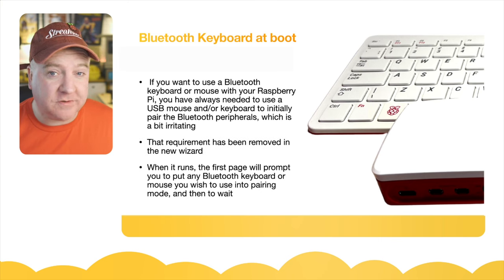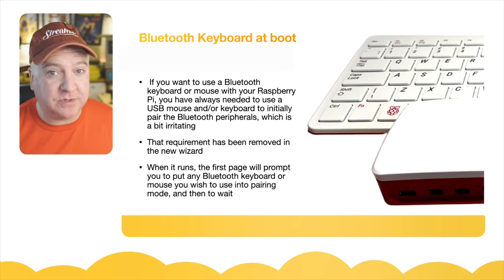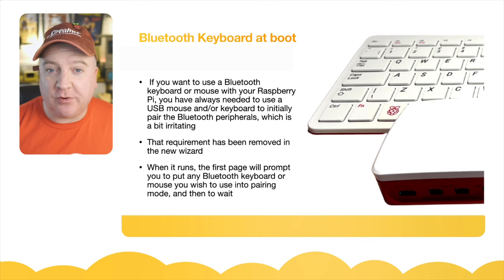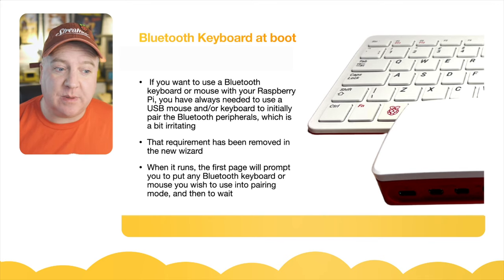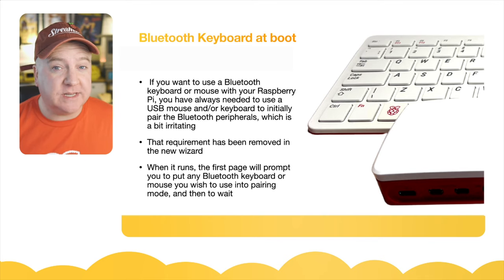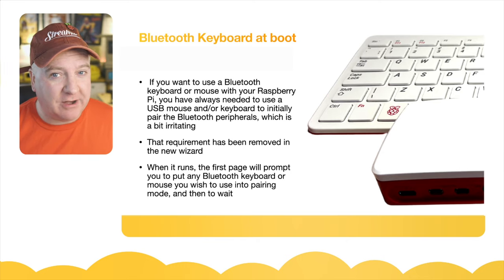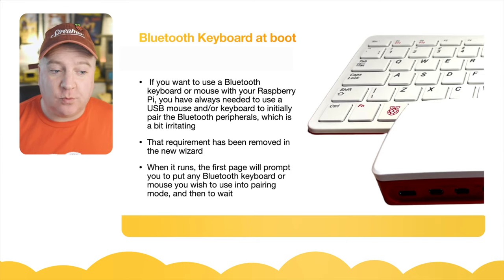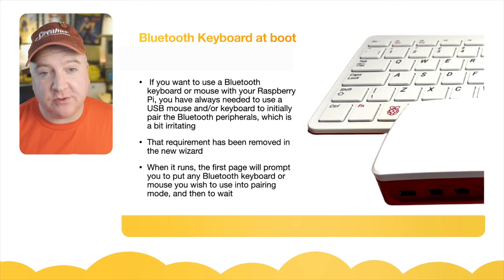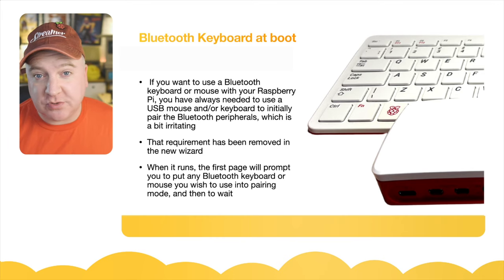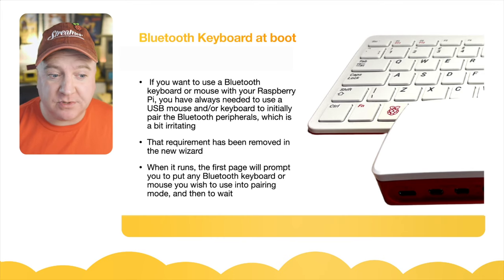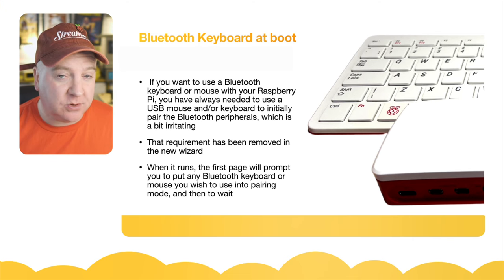One of the other new features added in this update is Bluetooth keyboard support at boot time. If you want to use a Bluetooth keyboard or mouse with the Raspberry Pi, you've always needed to use a USB keyboard or mouse to set it up first — and that can be quite irritating. That requirement has now been removed. In the new wizard, the first page will prompt you to connect a Bluetooth keyboard and mouse, and it will wait until you've done so.